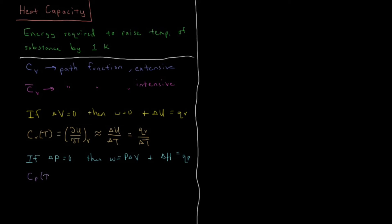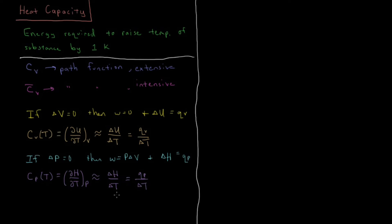We can define the constant pressure heat capacity as the partial derivative of enthalpy with respect to temperature at constant pressure. If CP isn't changing too quickly during a process, or if the temperature doesn't change so much that CP varies a lot, then this is approximately equal to the change in enthalpy divided by the change in temperature, which equals the constant pressure heat divided by the temperature change.